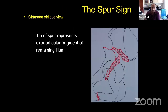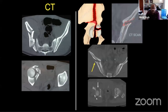The spur sign is often described in relation to an associated both column fracture. On the obturator oblique Judet view, the extra-articular portion of the remaining unfractured ilium appears like a spur. On CT scan, you will typically see the fracture line going through the iliac wing, down into the dome of the acetabulum — and extensive comminution can be present.